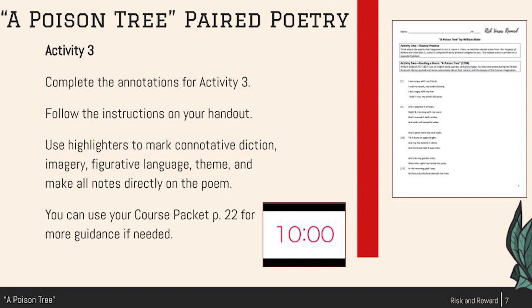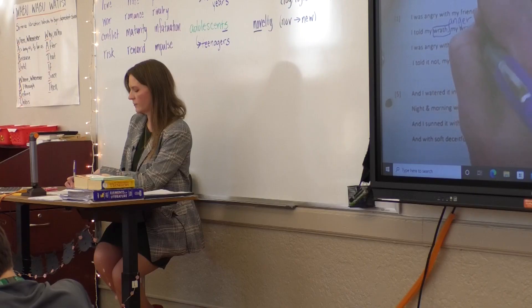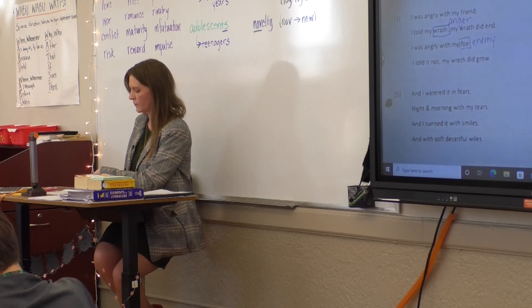In our first stanza, we have the word "wrath." Put a box around that. What is wrath? Anger — okay. Now didn't we see the word "angry" in the first line? So now we have another word for anger. What about the word "foe"? What does that mean? Enemy.